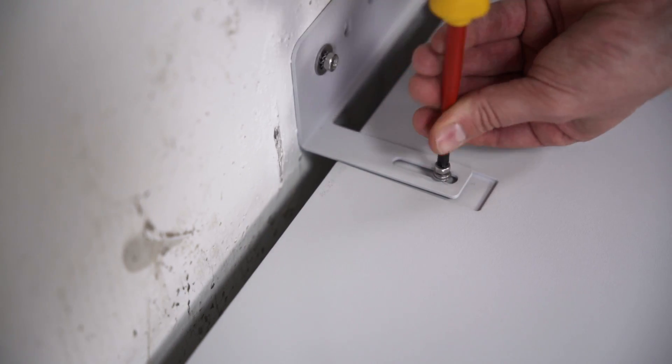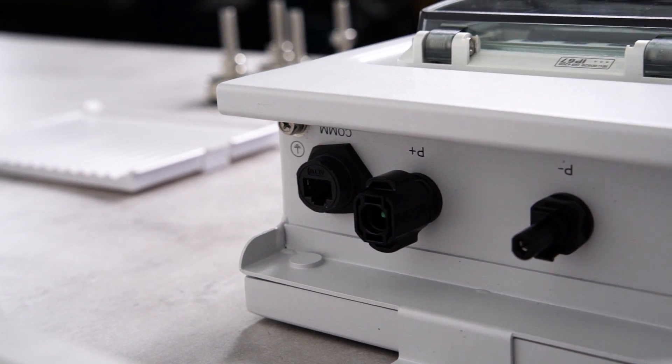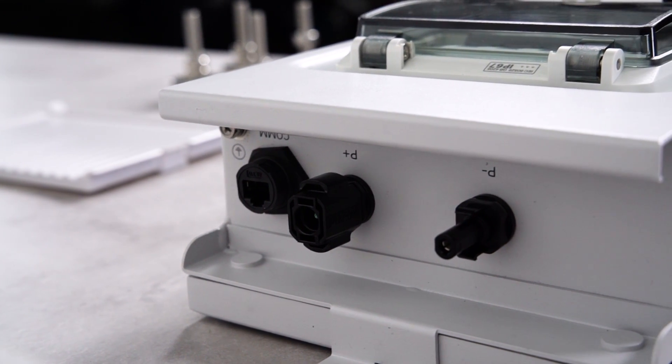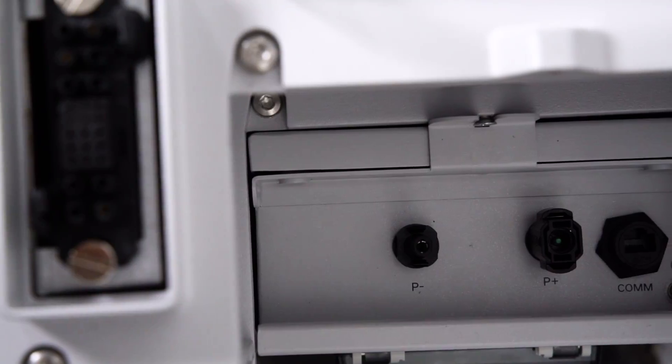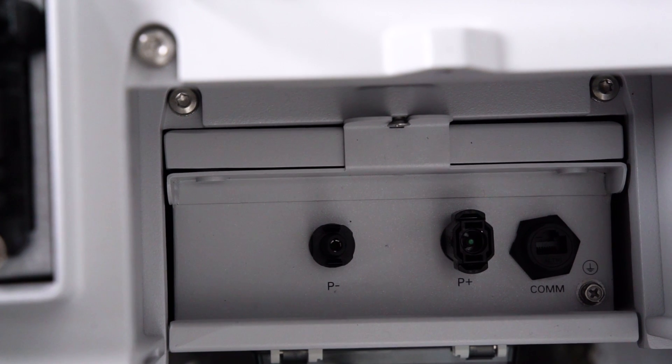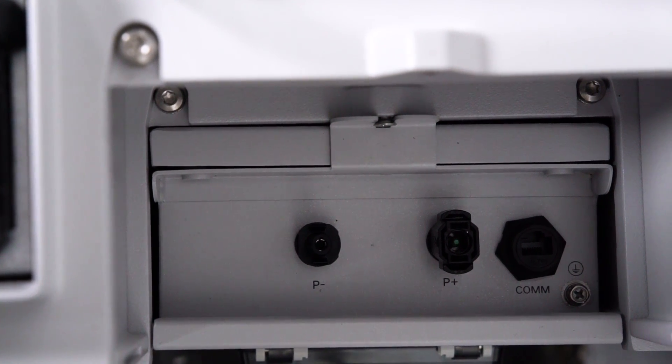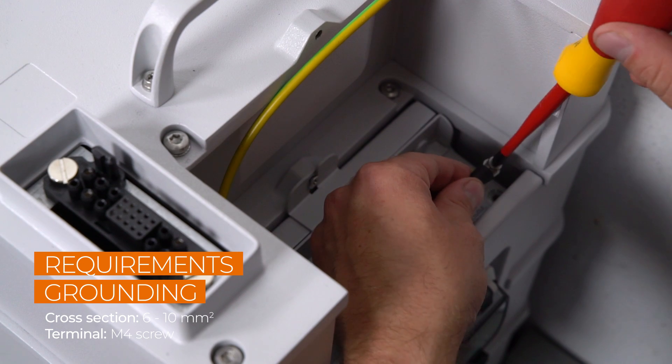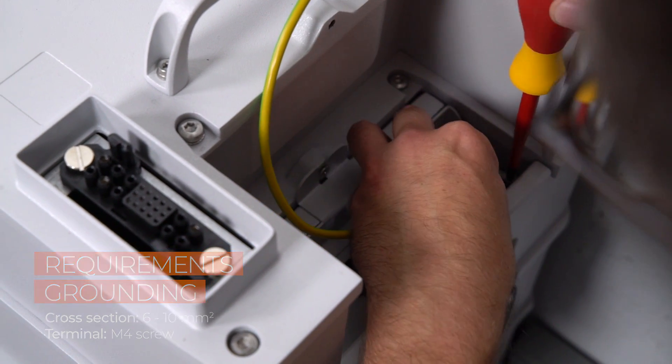Now let's come to cabling. The battery has four connectors: grounding, P plus, P minus, and one terminal for communication with the hybrid inverter. Let's start with the grounding. Fix it on the battery side and connect it to the ground at the bottom of the inverter.